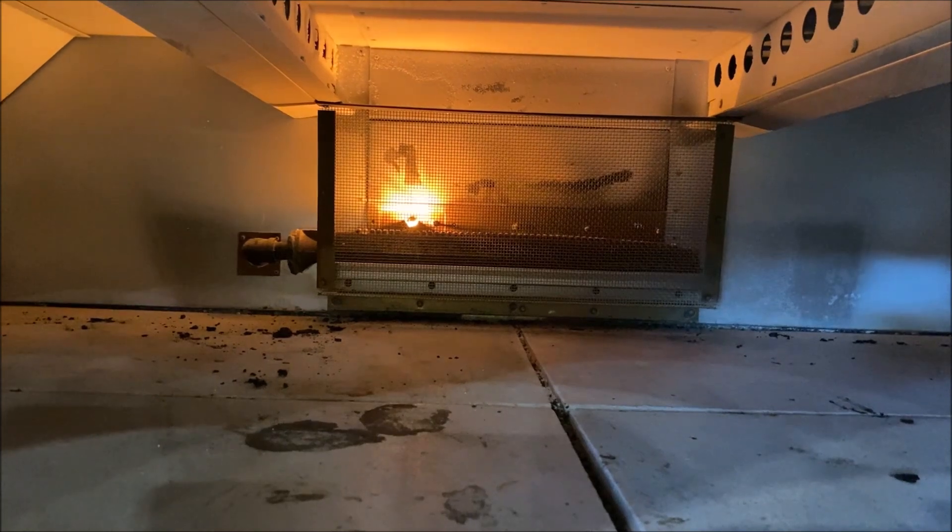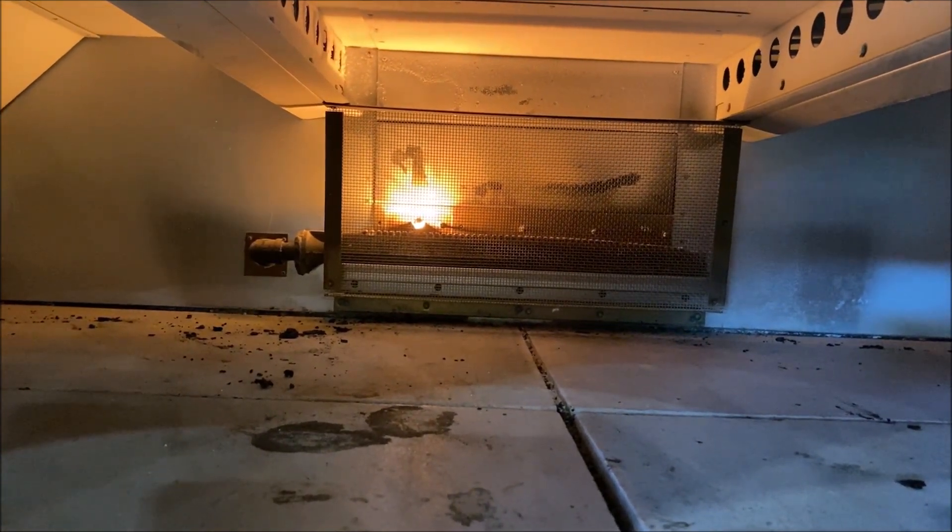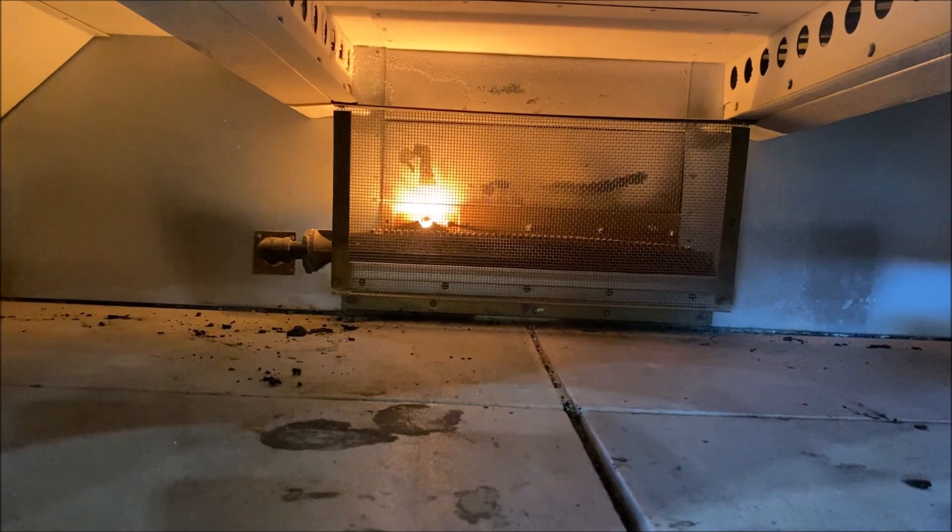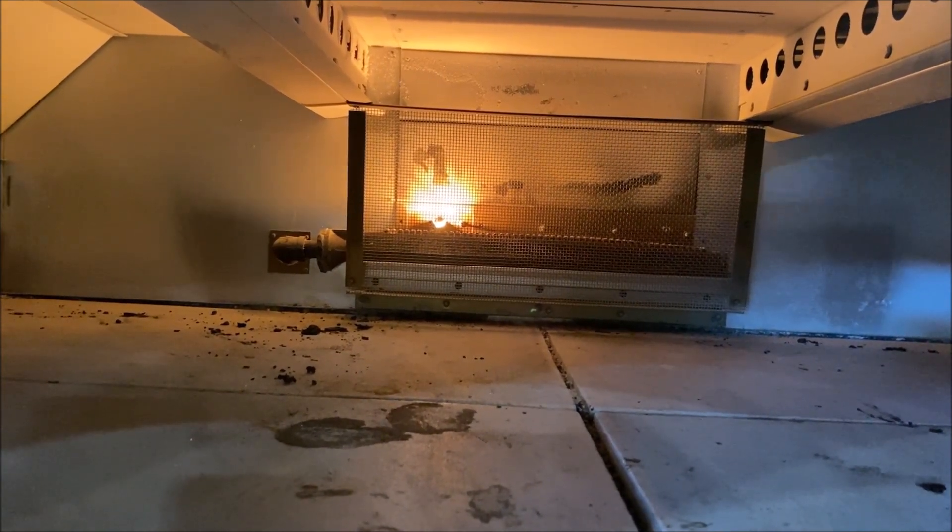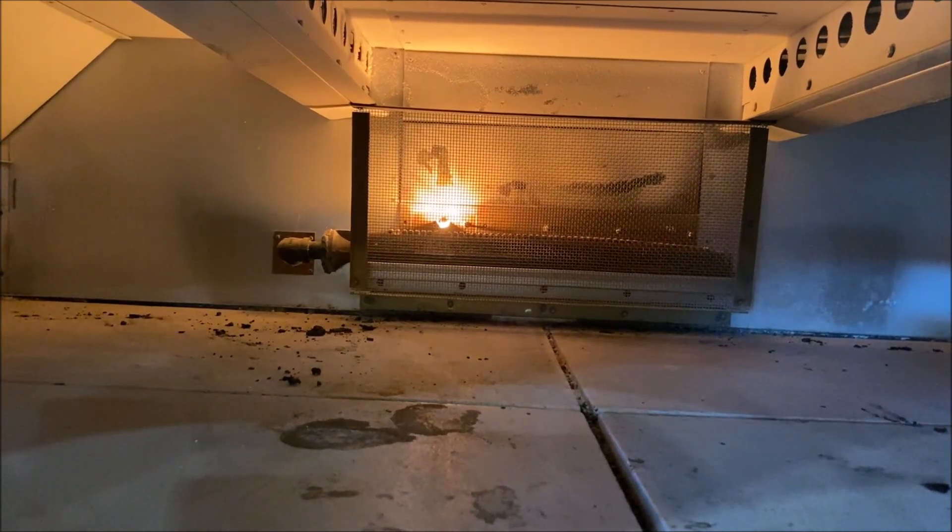We have a new gas valve installed. We did confirm correct gas pressure. Our glow igniter is on. You can tell by the visual cue, the bright orange light. Now we're going to wait our 10 to 15 seconds for our gas valve to receive that 24 volts and to open up the valve and to send gas to the burner.